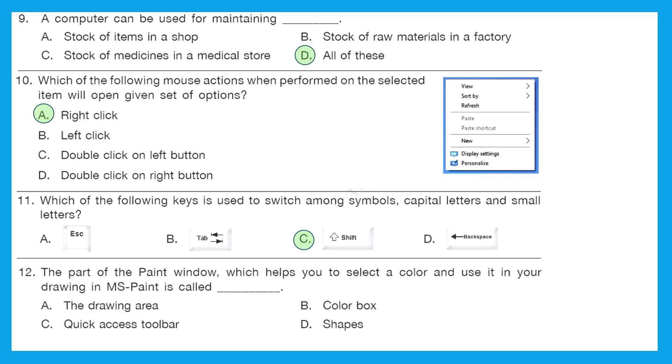Question 12: the part of the paint window which helps you to select a color and use it in your drawing in MS Paint is called? It's an easy one. It will be obviously the color box from where we can select the color and use it in our drawing. That is option B, which is right answer.